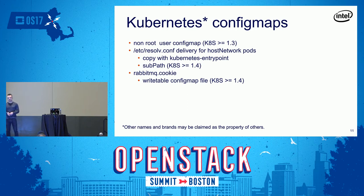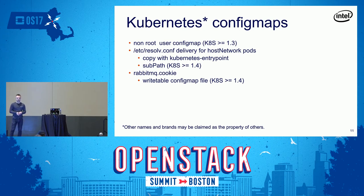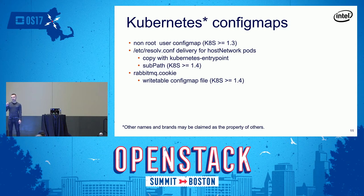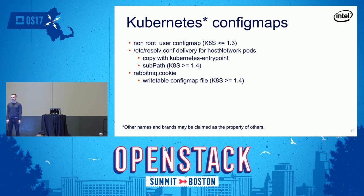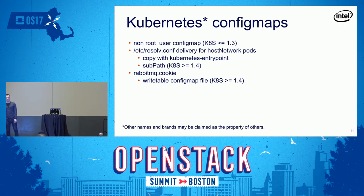Previously, we used the Kubernetes entry point to copy the file from the ConfigMap to the appropriate place in the container filesystem. Kubernetes 1.4 also introduced the ability to write to files mounted from ConfigMaps — previously, those files were read-only. This manifested when deploying a RabbitMQ cluster: the RabbitMQ cookie file, which contains a cluster password, requires write access, and this resulted in an error until it was fixed in Kubernetes 1.4.